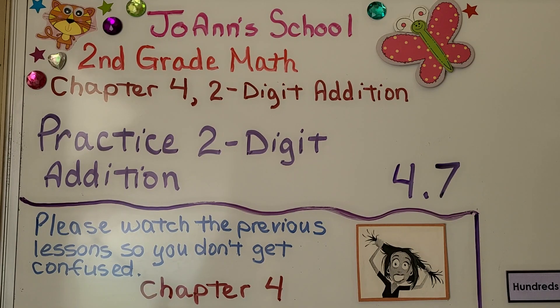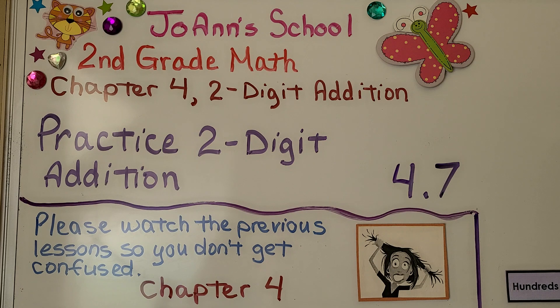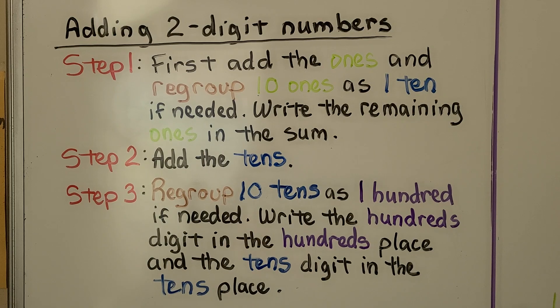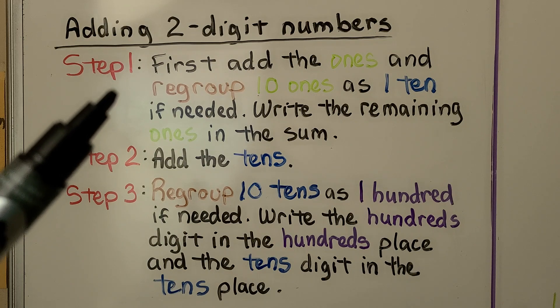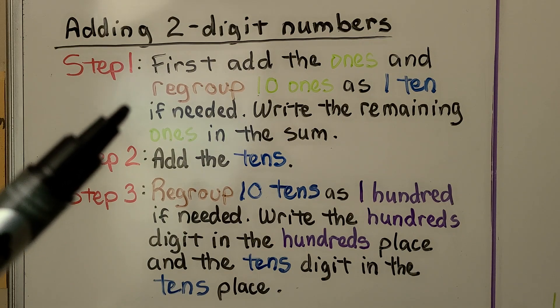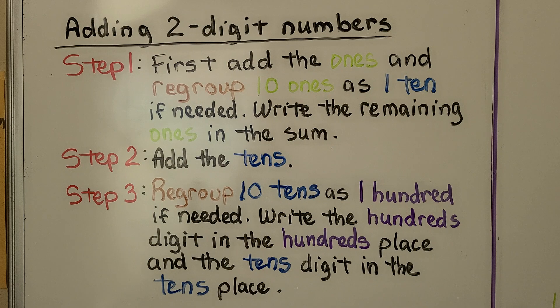Lesson 4.7: Practice Two-Digit Addition. We're also going to talk about what happens when we have ten or more tens. We talked about the steps for adding two-digit numbers in the last video. The first step is to add the ones and regroup ten ones as a ten if needed. We write the remaining ones in the sum in the ones column.